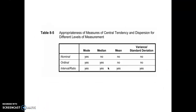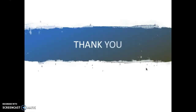This is an example of the appropriateness of central tendency and dispersion measures for different levels of measurement. For nominal, ordinal, and interval data, you can use mode for all three. Median cannot be used for nominal data but can be used for interval and ratio. Variance and standard deviation, like mean, can only be used for interval and ratio data. That's all for our lecture today — thank you very much for watching and have a nice day.